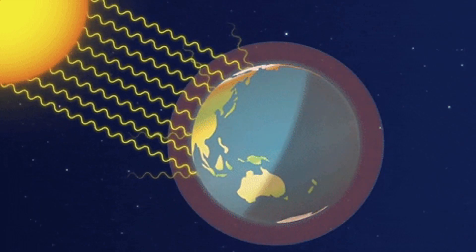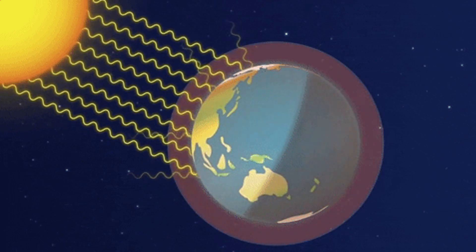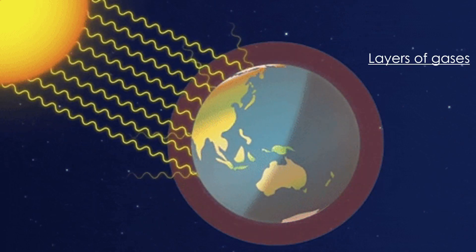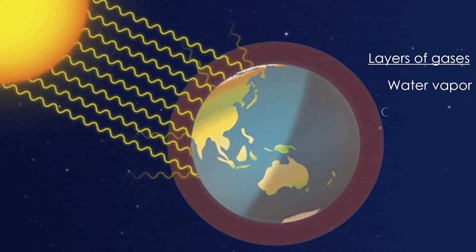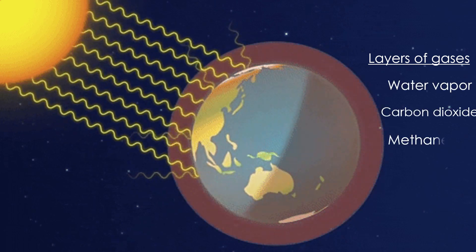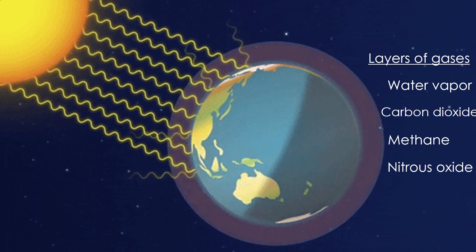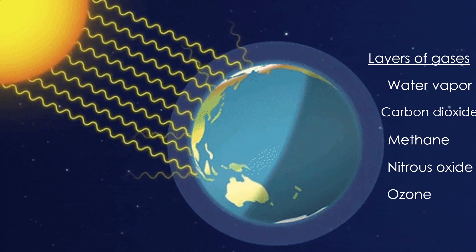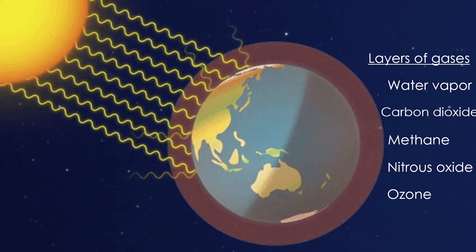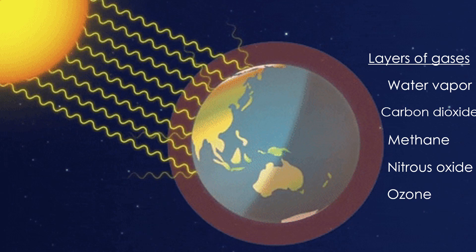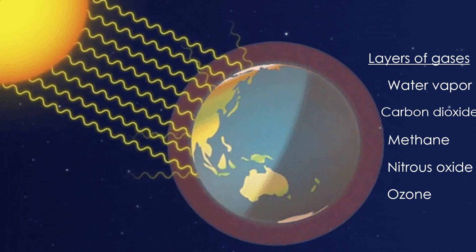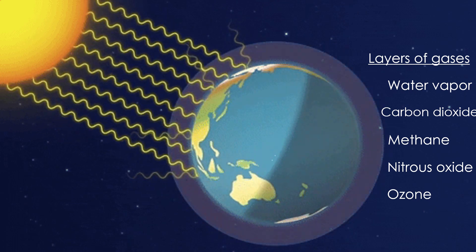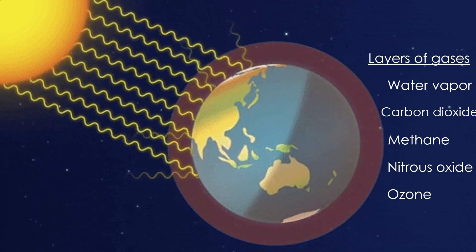Our atmosphere is responsible for keeping the Earth's temperature stable. It is made up of layers of gases such as water vapor, carbon dioxide, methane, nitrous oxide, and ozone. When the sun's rays warm the Earth, it reflects the heat back into space. Some of this heat is trapped by the gases in our atmosphere, keeping the planet comfortably warm for everyone and giving us a stable weather.